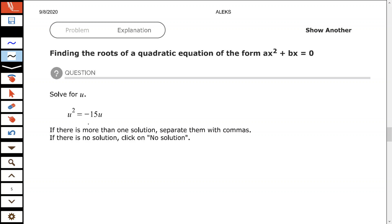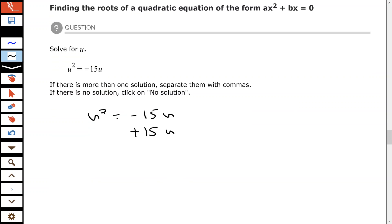So I'm going to start off by moving that negative 15u by adding 15u to both sides. And that will give me on the left hand side u squared plus 15u, and then equals zero.